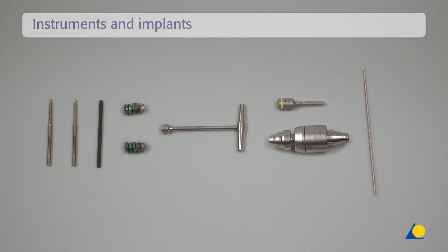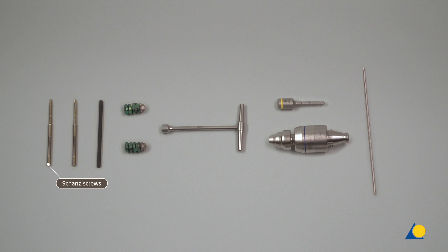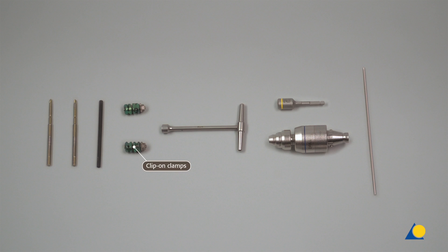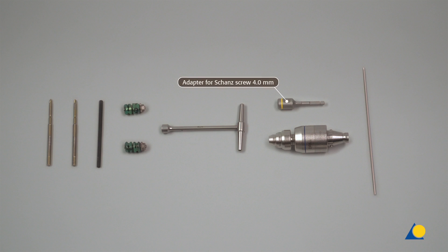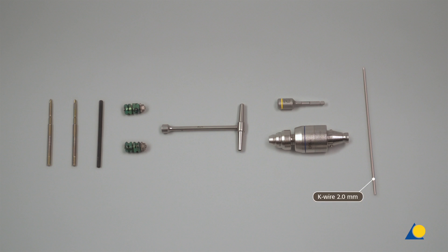The instruments required for reduction and fixation are: The shunt's screws, 3.0 to 4.0 mm diameter. The rod, 4.0 mm diameter. The clip-on clamp. The T-wrench. The adapter for shunt's screw, 4.0 mm diameter. The quick coupling chuck. And the K-wire, 2.0 mm diameter.